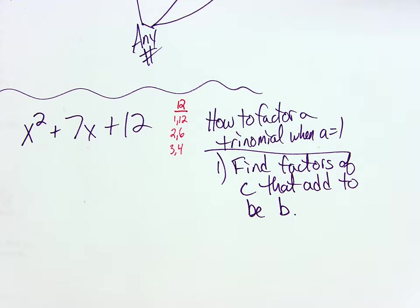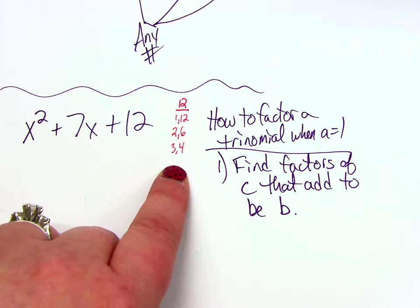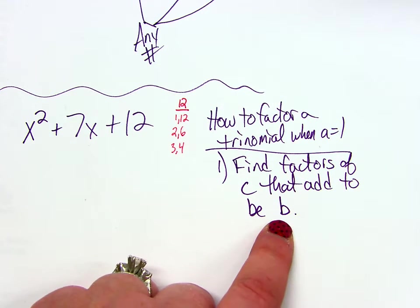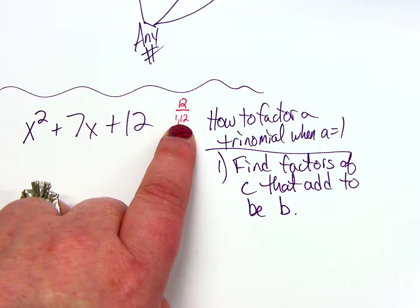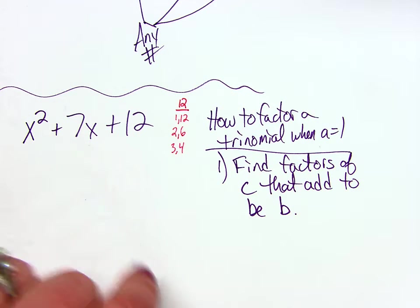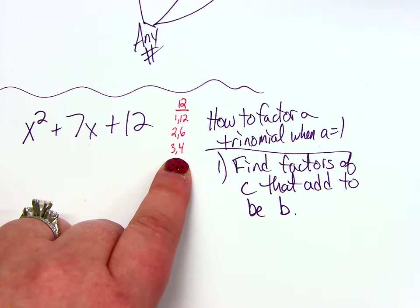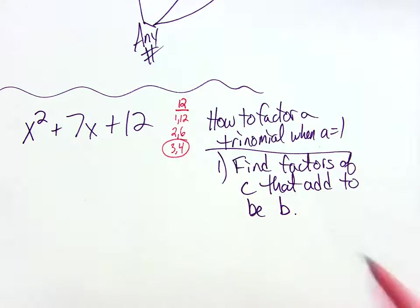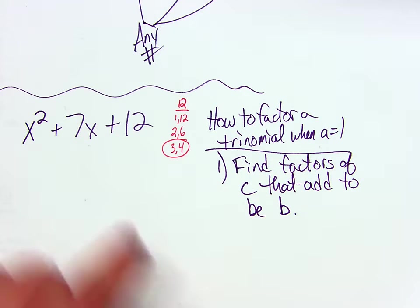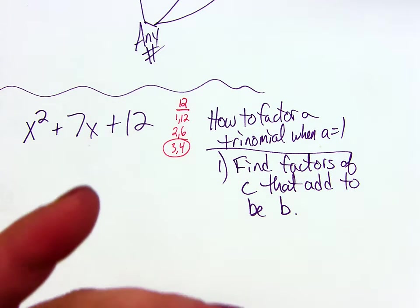So what I want to do now is I want factors of C, so here's all the factors of C, that add to be B. So when I add these two digits together, I get 13. What's B though in this? 7. So that's not the right pair. 2 and 6, those add to be 8. That's not the right pair. 3 and 4 add to be 7. So once you find the factor pair that adds to be this number, you're almost done, literally.